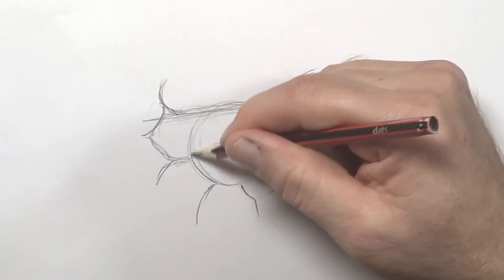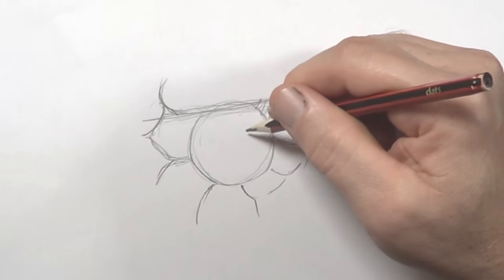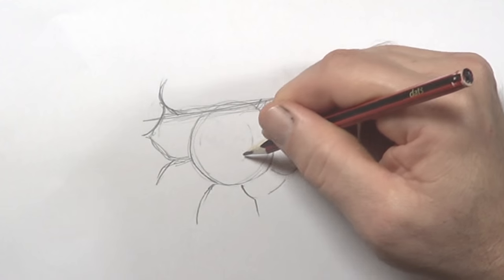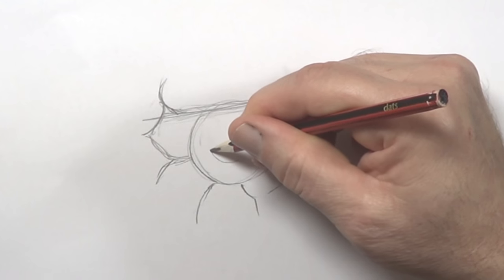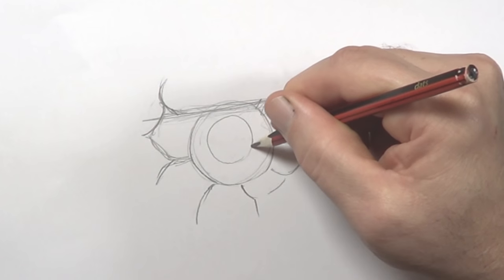Now the funny thing about these guys is they've got very dark eyes with like a little gold ring inside. It's the same with mambas, tiger snakes. So I'm putting, first of all, a circle in here, like this.